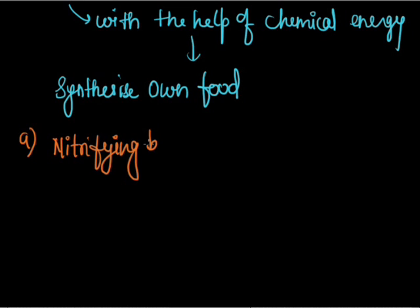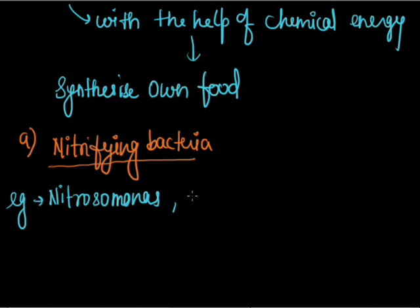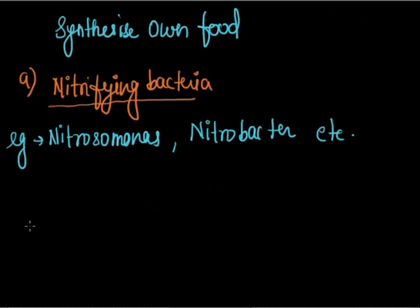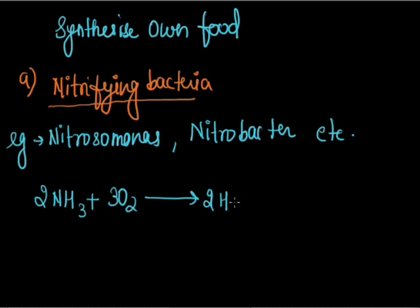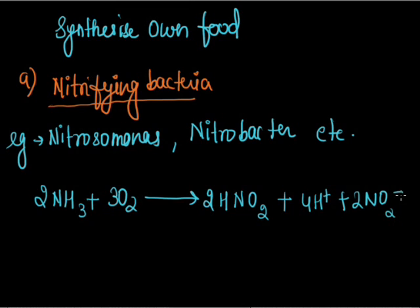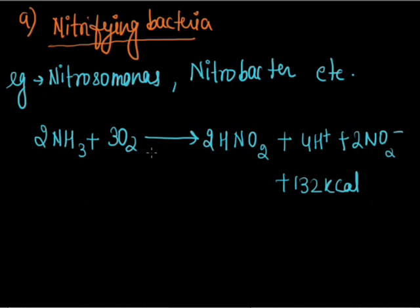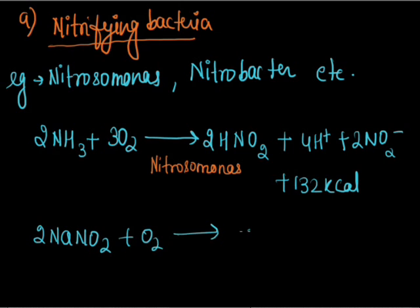The first type is nitrifying bacteria — these include Nitrosomonas and Nitrobacter. They perform conversion of ammonia into nitrites and then nitrites into nitrates. The reaction: 2 NH₃ + 3 O₂ → 2 HNO₂ + 4 H⁺ + 132 kilocalories of energy, performed by Nitrosomonas. The next step converts nitrite into nitrate, and this is done by Nitrobacter.